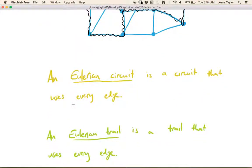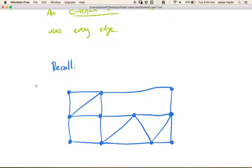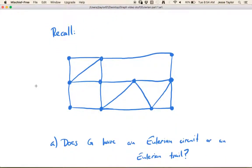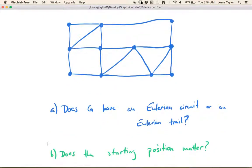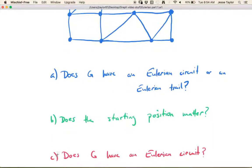There's also the idea of an Eulerian trail, which is a trail that uses every single edge. So coming back to our original graph, our questions were: does G have an Eulerian circuit or an Eulerian trail? Does the starting position matter? And can you start and end in the same place — that is, does it specifically have an Eulerian circuit?